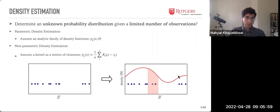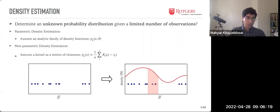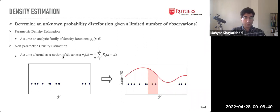The classic approach to distribution learning is density estimation. Given observations in some space X, density estimation assumes there exists a non-negative function such that its integral over a region gives the probability of samples coming from that region. There are two main ways to model this: parametric density estimation, which assumes an analytic family of density functions such as Gaussians or mixture of Gaussians and optimizes parameters to maximize likelihood; and non-parametric density estimation, which uses a kernel as a notion of closeness.